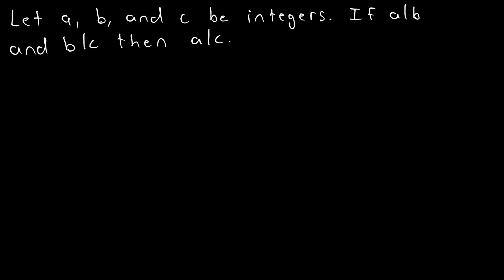Hopefully you've done that. We'll go ahead and jump into the proof. For starters, of course, we suppose the hypothesis of the result we want to prove. We suppose that A divides B and that B divides C.